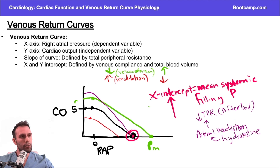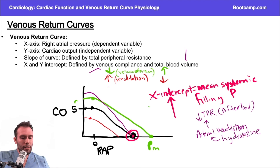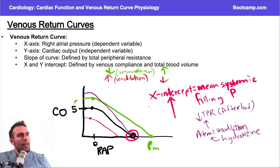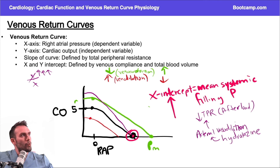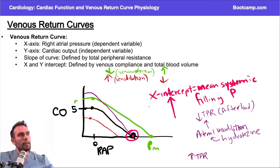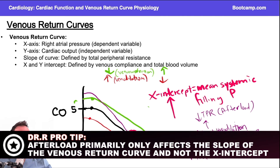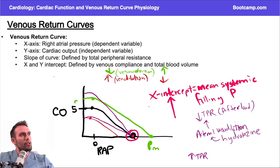If I shut down the heart completely, changes at the arterioles don't affect mean systemic filling pressure — I didn't add volume or change the venous storage container. The resistance doesn't matter if no blood is being pumped against it. So mean systemic filling pressure stays the same; only the slope changes. Slope is rise over run — cardiac output increases disproportionately relative to right atrial pressure when afterload is lowered. Conversely, increasing afterload — from aortic coarctation or a drug like phenylephrine — lowers the slope, but mean systemic filling pressure remains unchanged. The slope of the venous return curve is defined by total peripheral resistance.